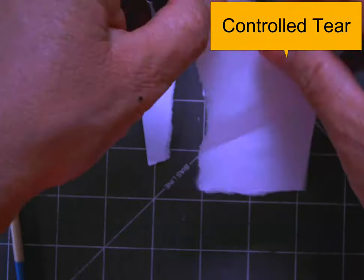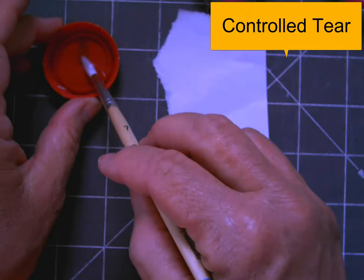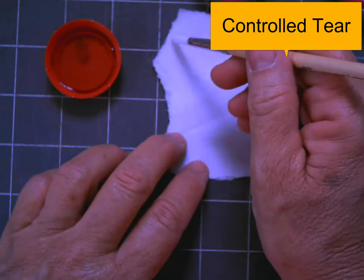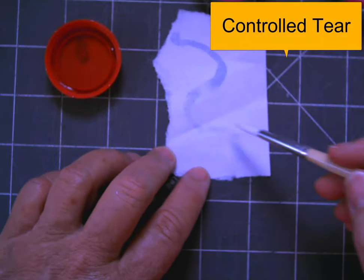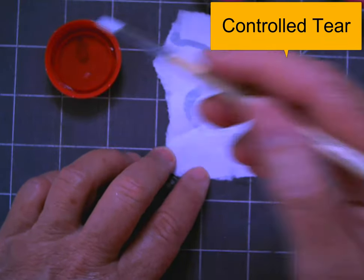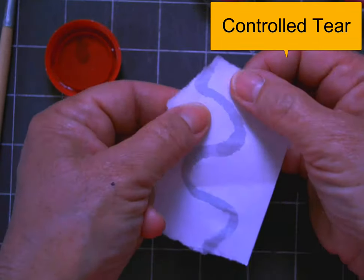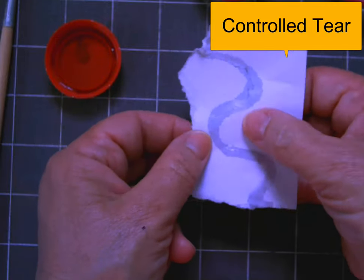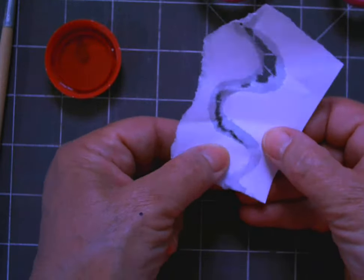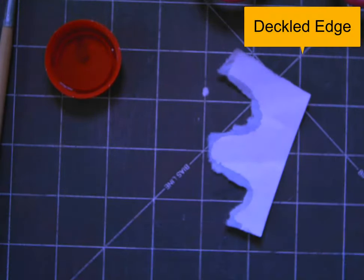A controlled tear. Paper has a grain, so it's going to tear more easily in one direction than the other. If I want to control exactly where it's going to tear, I can put clean water on a paint brush and just paint the water where I want the paper to tear. Once it goes gray like that, then pull at it gently, and you're able to control exactly where the paper tears, which gives you this lovely little deckled edge.